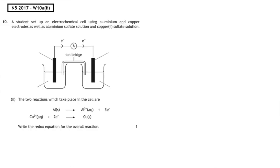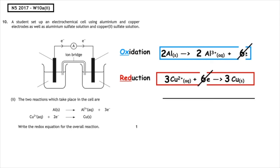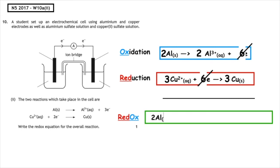Past paper question: National 5 2017, written 10a part 2. A student set up an electrochemical cell using aluminium and copper electrodes with aluminium sulphate and copper(II) sulphate solutions. Write the overall redox equation. The oxidation has three electrons and the reduction has two, so we cross-multiply: multiply the oxidation by two and the reduction by three. The electrons cancel, giving the overall redox: 2Al(s) + 3Cu²⁺(aq) → 2Al³⁺(aq) + 3Cu(s).